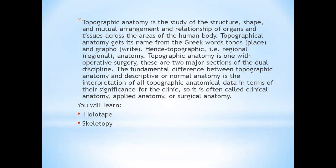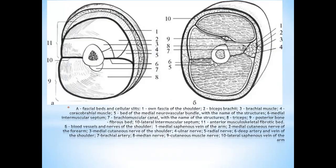You will learn holotopy, skeletopy, syntopia, and layered structure. As you see, the first is the own fascia of the shoulder, the second is the biceps brachii, the third is the brachial muscle, the fourth is the brachial muscle, the fifth is the bed of the medial neurovascular bundle with the name of the structures, the sixth is the medial intermuscular septum, the seventh is the brachial muscle canal with the name of the structures, the triceps posterior bone fibrosis bed, the third is the lateral intermuscular septum, and the anterior muscular skeletal fibrosis bed.